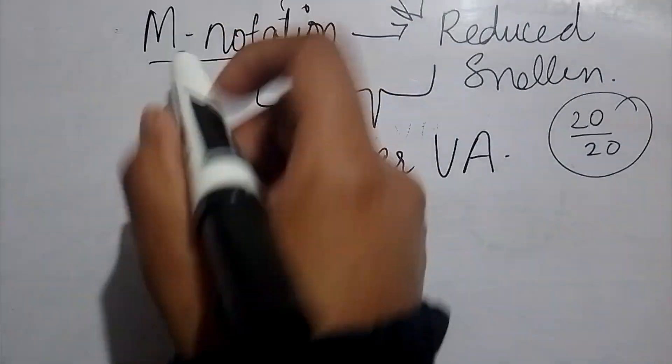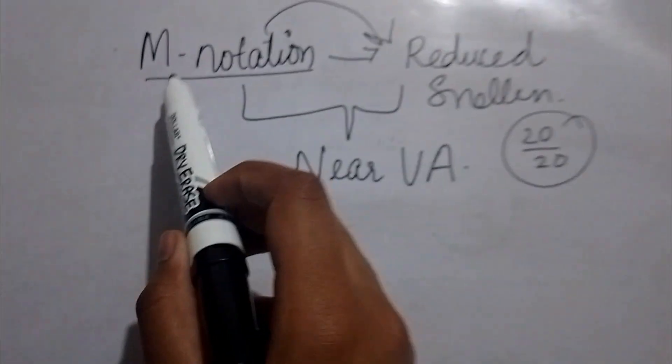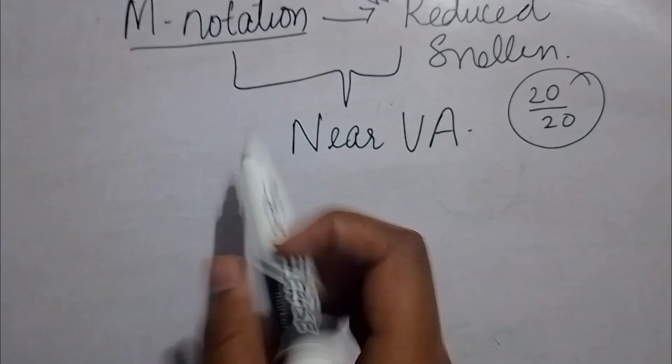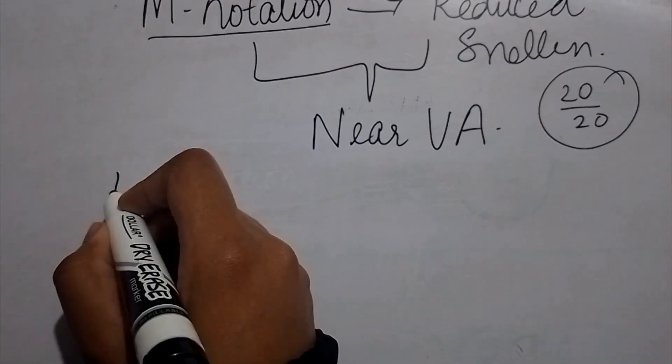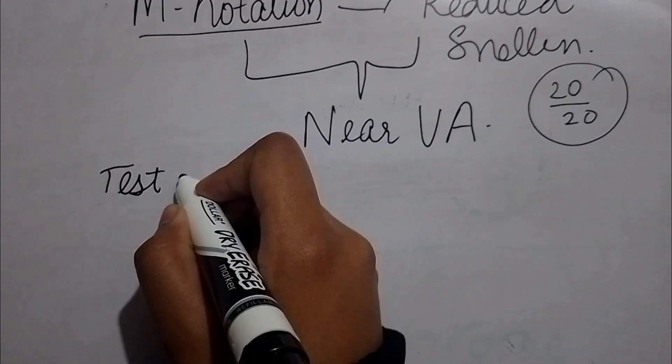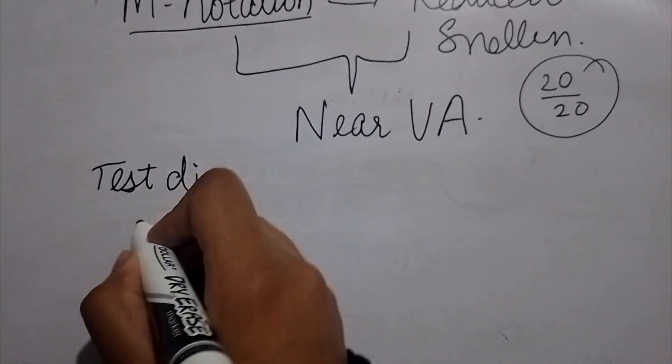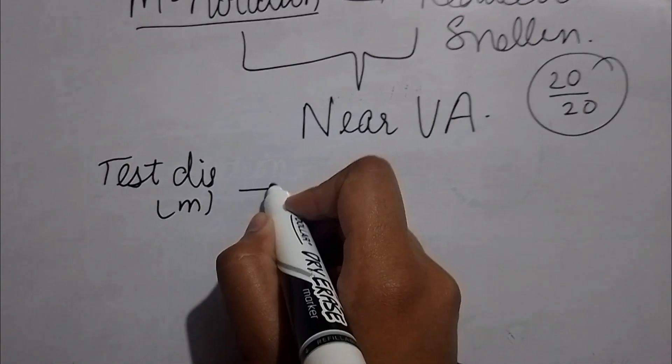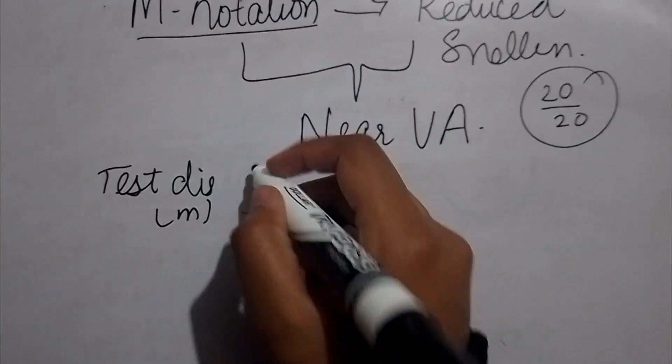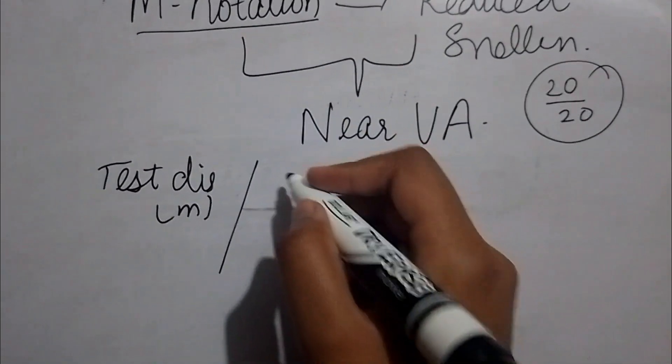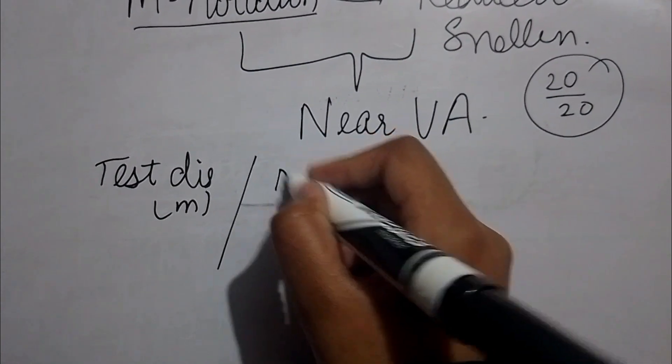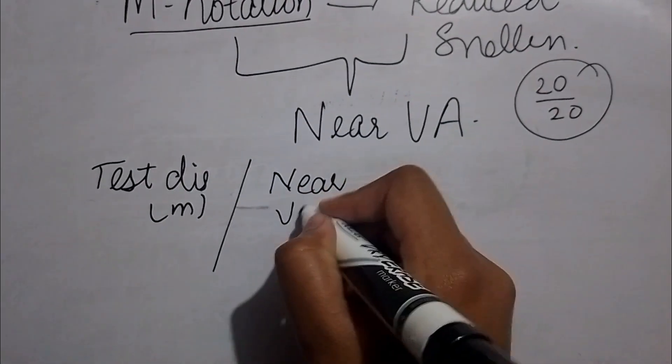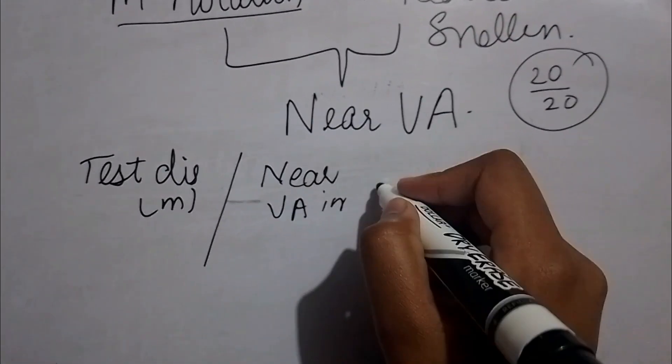First of all, the readings which we calculate from M-notation is testing distance in meters. You get the testing distance in meters, and it is divided by the near visual acuity in M-notation.